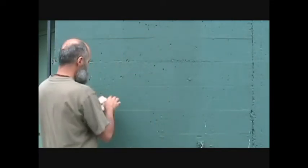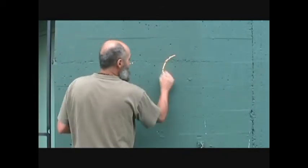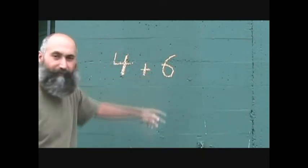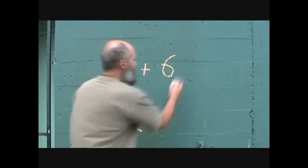For example, if you had, let's do orange, 4 and 6. Let's say you have 4 plus 6. Now, if you had this, you would just add these up and this equals 10.